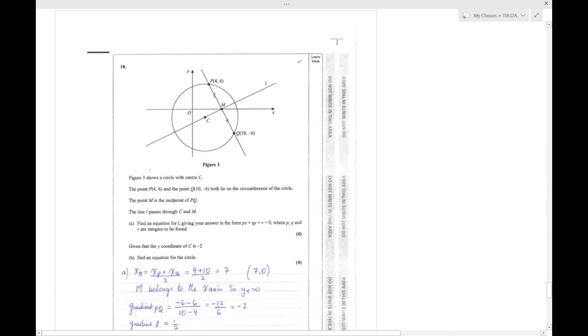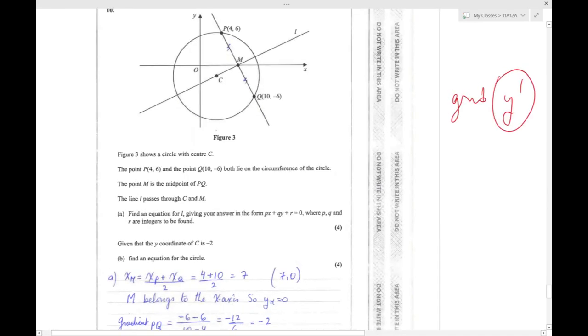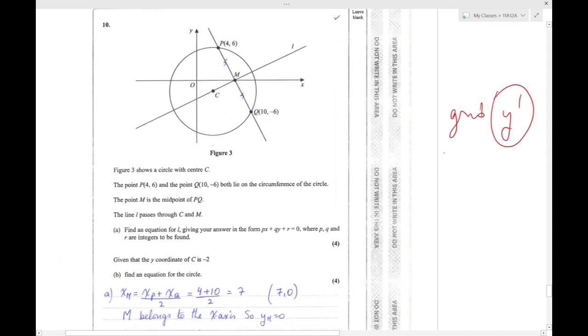Now the point P at (6, 0) - this is P - and the point Q both lie on the circumference of the circle. M is the midpoint. Be careful, you have to learn and memorize the midpoint formula: X of M equals X of P plus X of Q over 2, and the same for Y of M. They don't give this formula in the formula booklet.